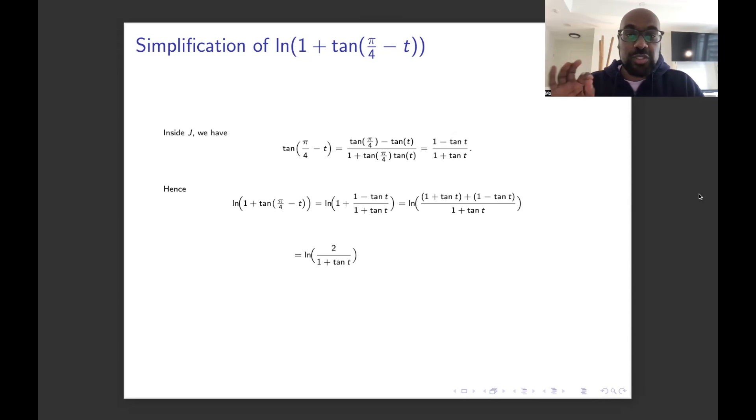Now this is actually really great because we can break up the natural logarithm. ln of 2/(1 + tan t) is the natural logarithm of a quotient. That's the difference of the natural logarithm of the numerator and the denominator. So we get ln(2) - ln(1 + tan t).